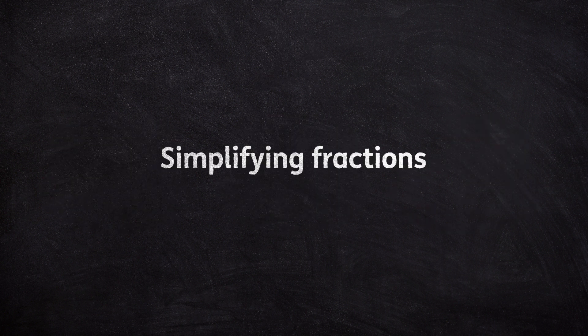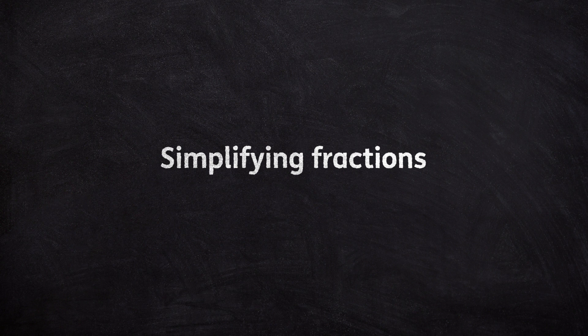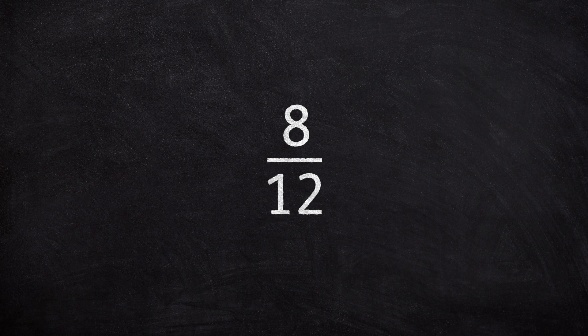Fractions are written in the simplest way when both the numerator and denominator are as small as possible. We can simplify 8 twelfths to 2 thirds.